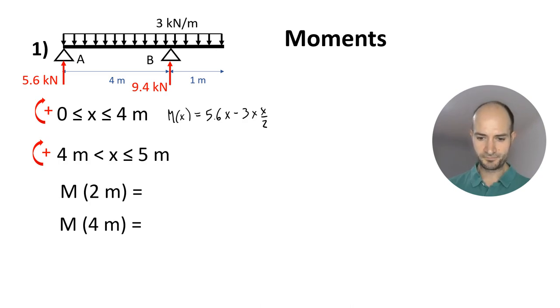If we continue, then we will have, as before, 5.6X minus 3X squared divided by 2. But now, we add reaction B, positive, and is 9.4 times X minus 4 meters. Now, if you apply different values to X, like 0, 1, 2, whatever you want, you will be able to draw the moment diagram. Here, I'm just going to calculate two different values.